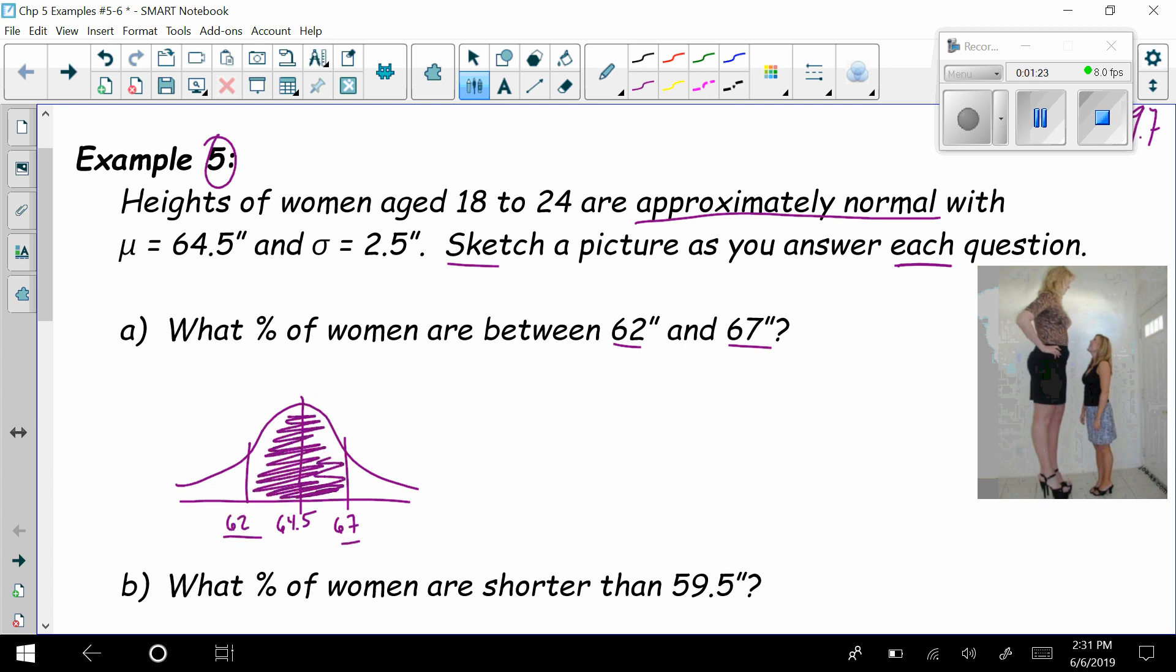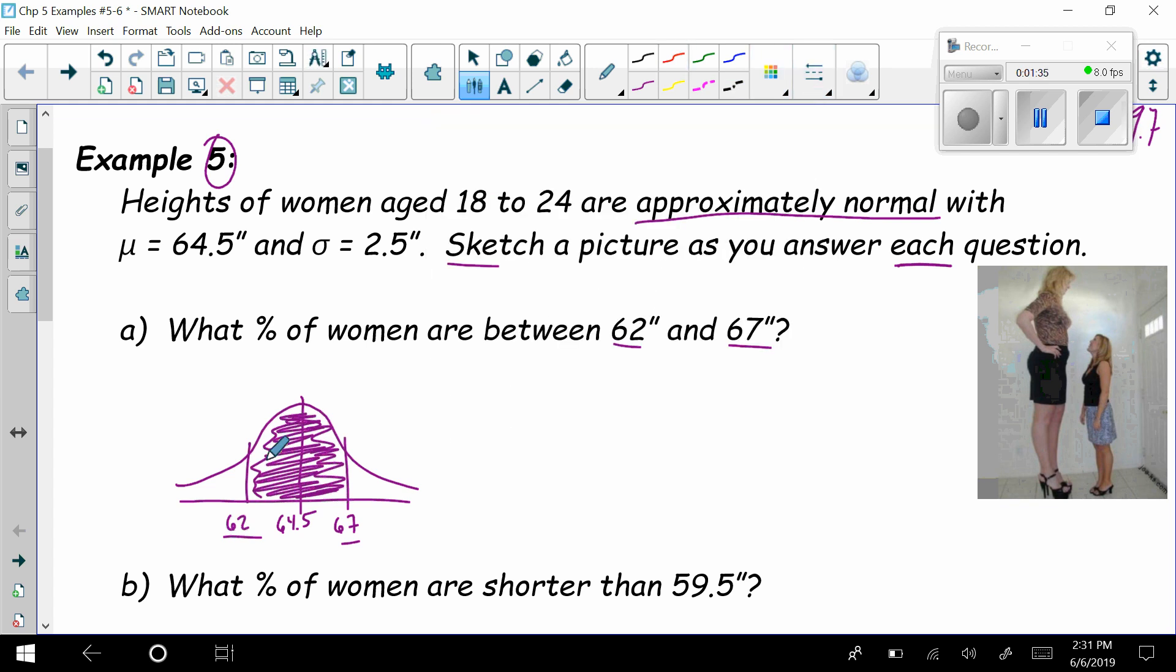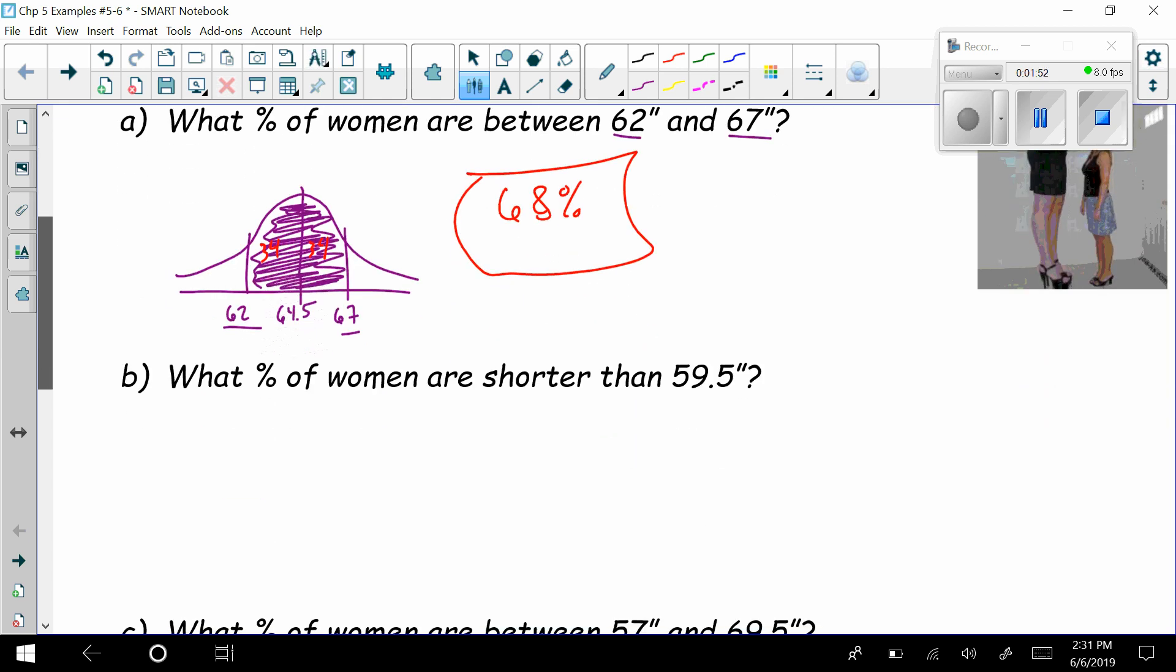so it's like this area in between. Yes, it's important that you shade. And how much data sits in here? Well, according to the empirical rule, there is 34% sits here, 34% sits here. This is the classic, one standard deviation above and below. So we have a percentage of 68%. That wasn't too bad, hopefully.